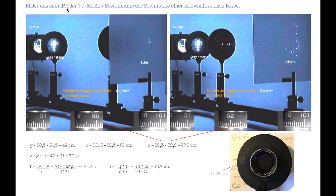Bilder aus dem IBE der TU Berlin: Bestimmung der Brennweite einer Konvexlinse nach Bessel. Ich habe die beiden Bilder fotografiert, bei denen ich die Scharfeinstellung bekomme. Anhand dieser Einstellräder können wir die Gegenstandsweite mit 80,3 minus 31,3 cm ablesen – das ergibt 49 cm für die Gegenstandsweite.